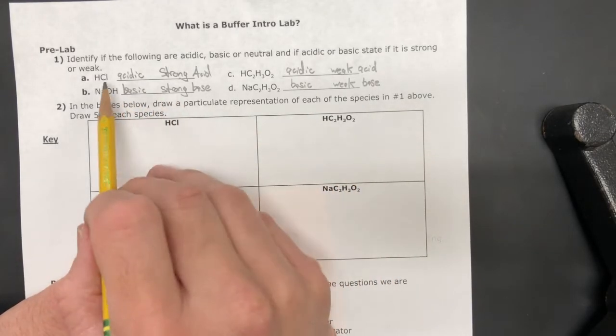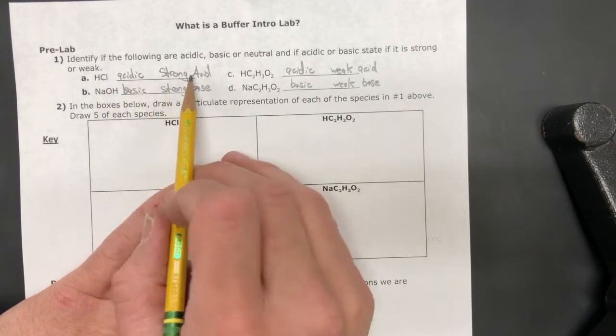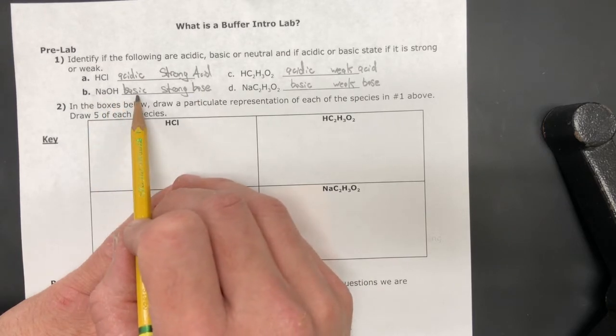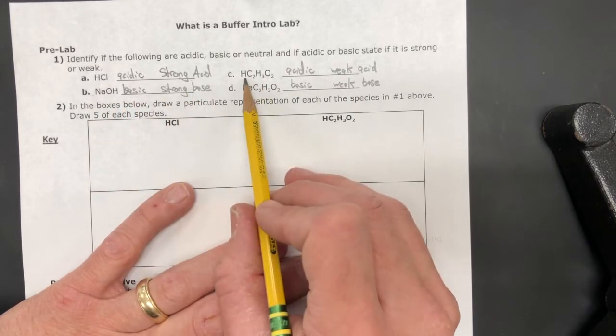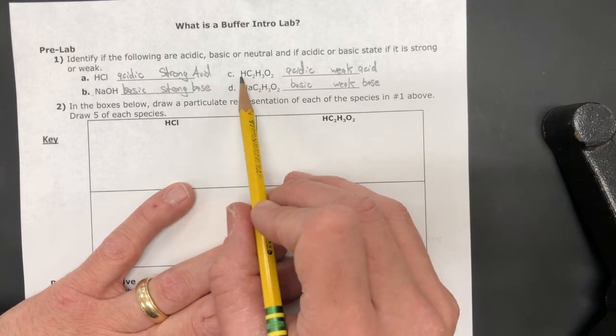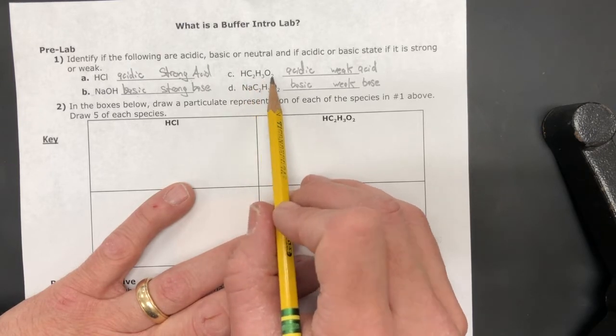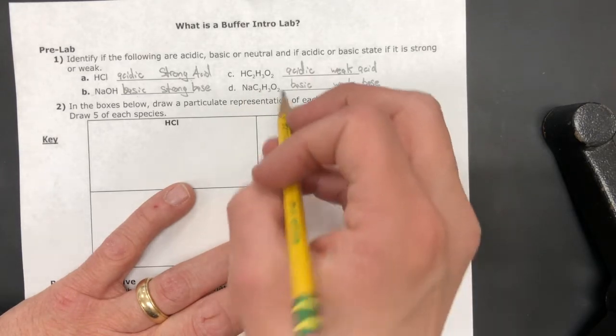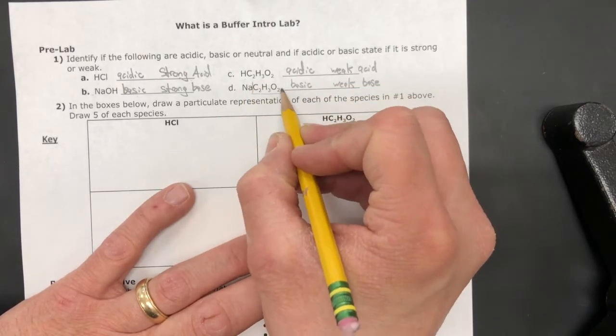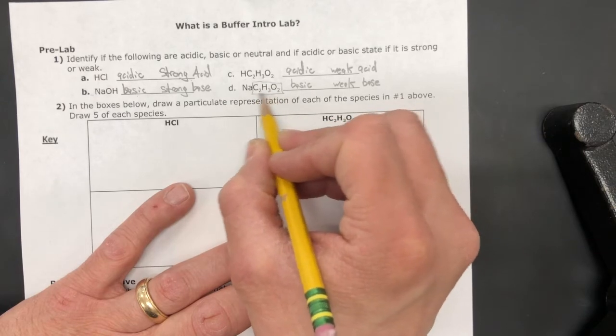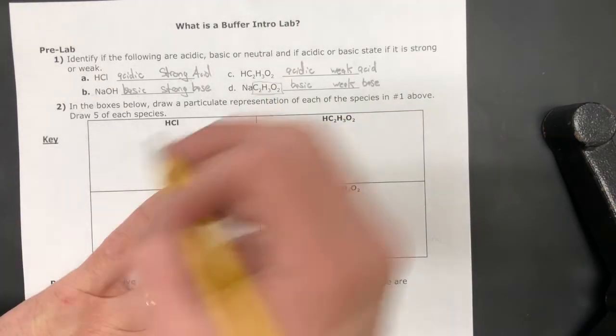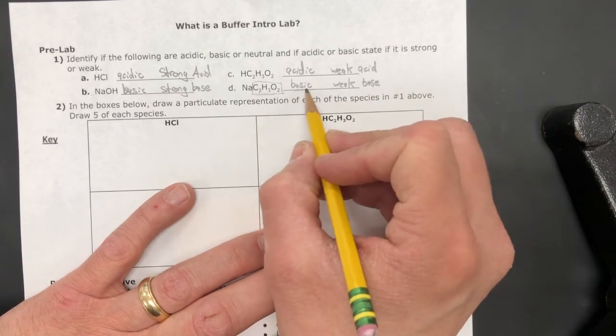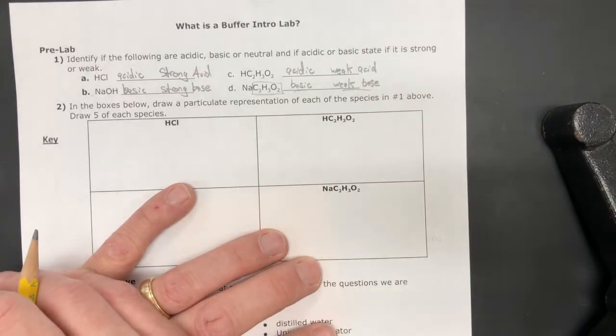So on pre-lab question number one, I said HCl is acidic, that's a strong acid. Sodium hydroxide, that's basic, that's a strong base. This is acetic acid, HC2H3O2, that's acidic, that's a weak acid. This last one was a bit tricky. It turns out that this ion, this acetate ion, has the ability to take hydrogen away from something, and so it does make it basic, and that would be a weak base.